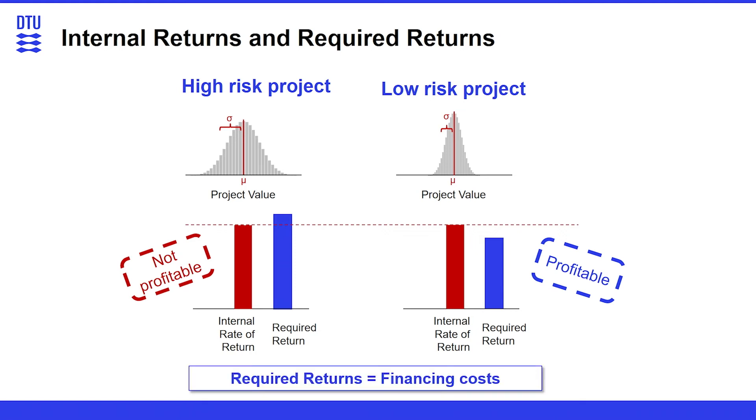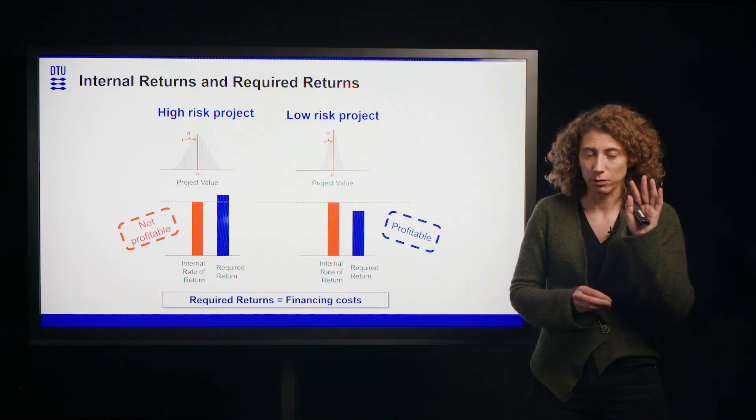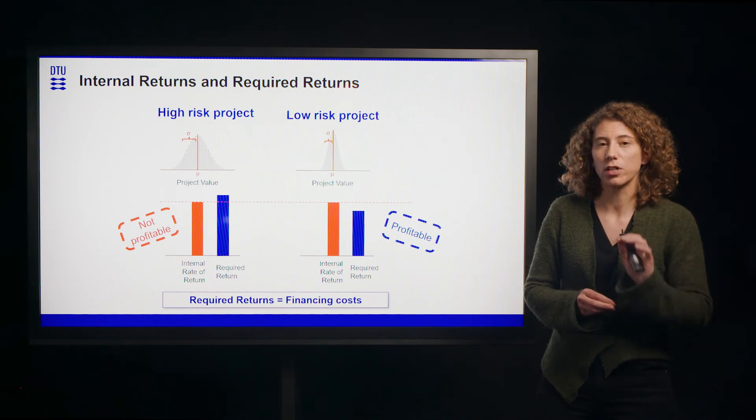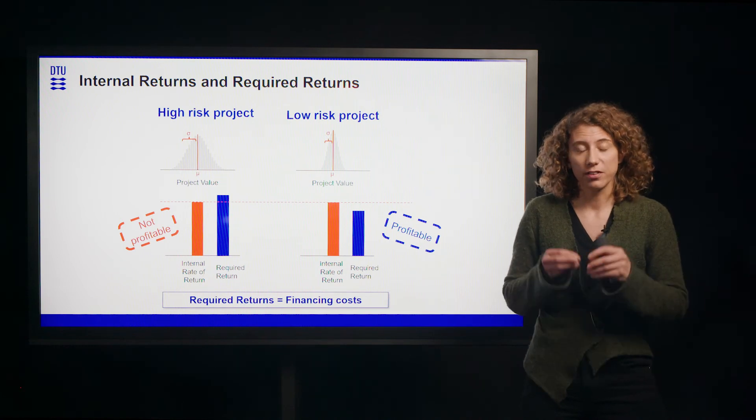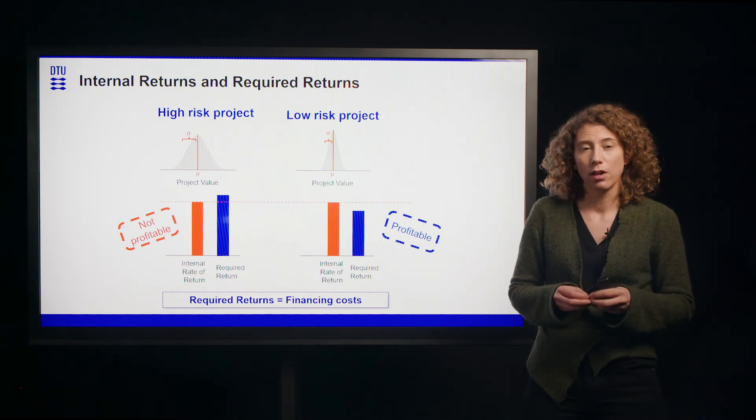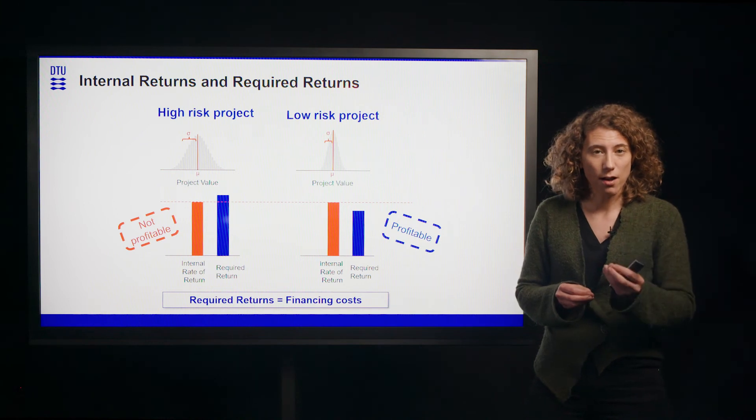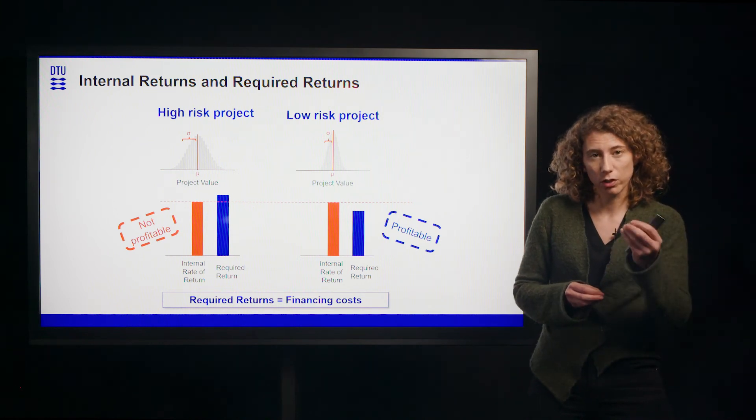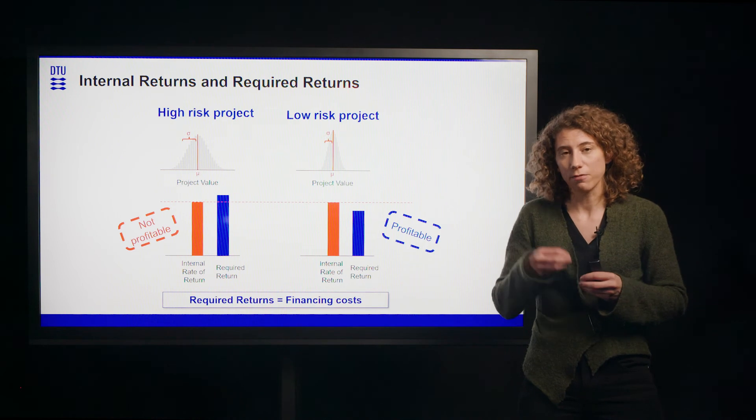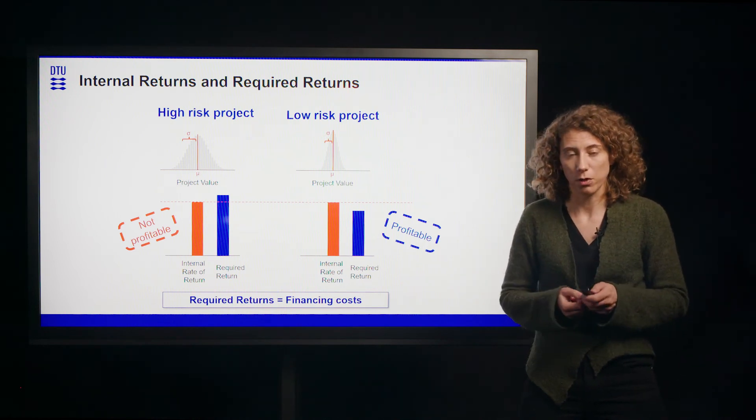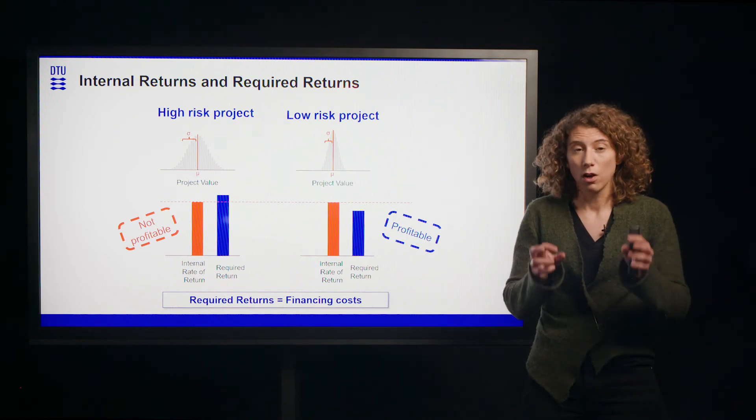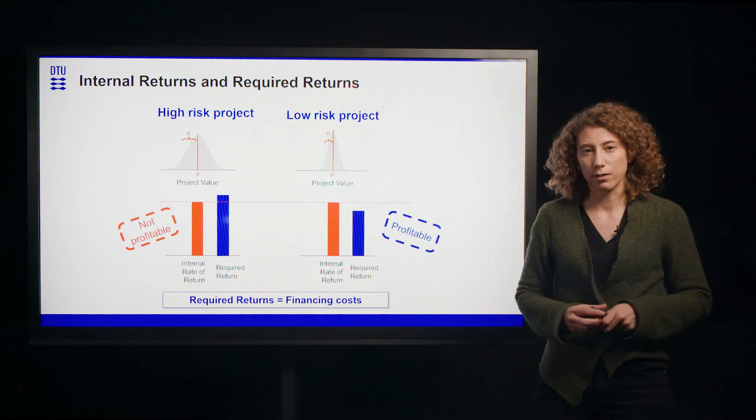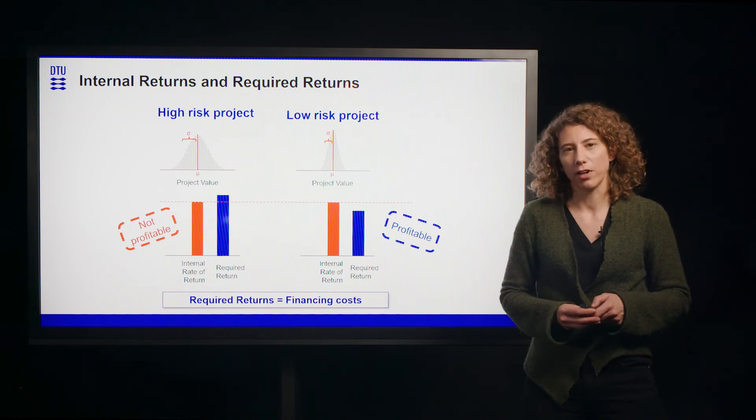So projects with the same internal rate of return can on the one hand be deemed not profitable or on the other hand be deemed profitable. What we can say here is that the required returns, we look at the project and see what does it need to yield for me, can also be seen as the financing cost. Because that is what the investors, the shareholders would want to have in return to giving you the money or even the banks would have an interest in return to giving you the money. So the required returns are also the financing cost which are the cost of capital which you use as a discounting in your net present value calculation.